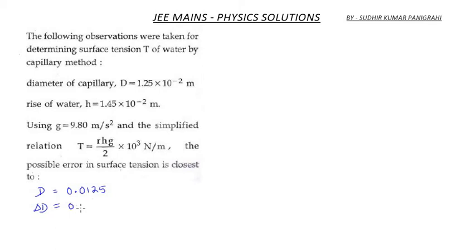Similarly, height h equals 0.0145. The error in height h can be written as the least count, that is 0.0001. Now the value of g can be written as 9.80.